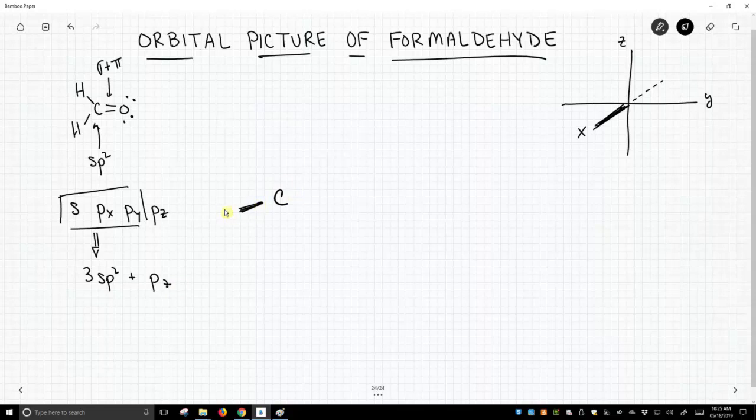So this is what the sigma framework, the single bonds for carbon, will look like. They sit in the xy plane representing the trigonal plane, and there's our pz on carbon.